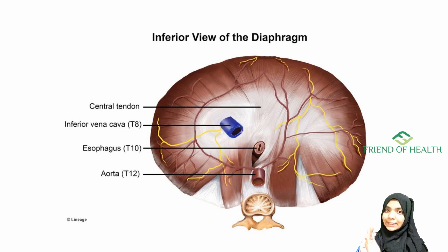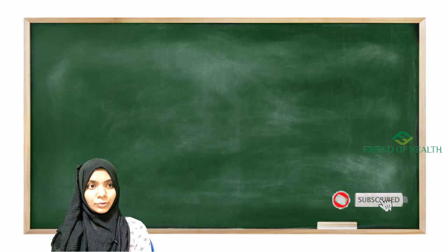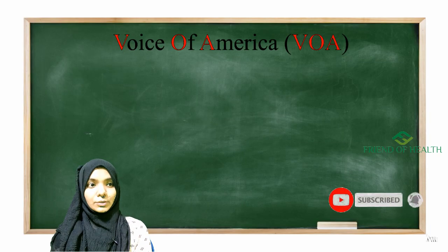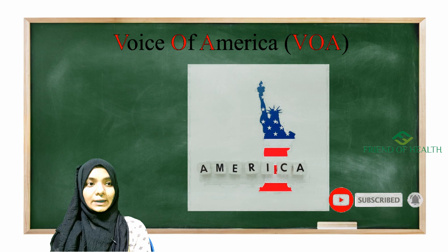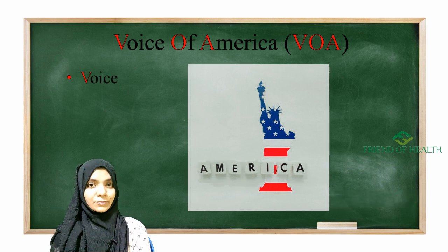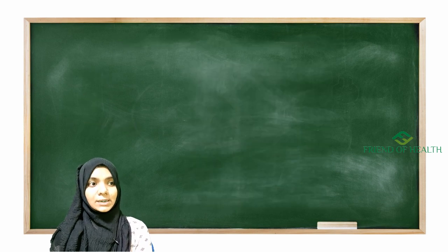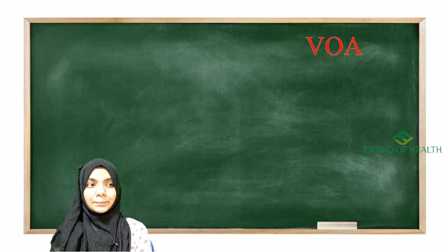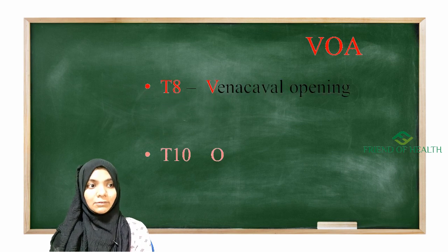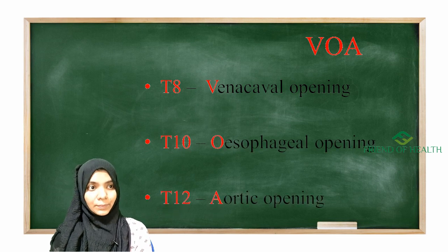Now let us move to the mnemonic. The mnemonic is 'Voice of America.' This picture is just for memorizing it. So in 'Voice of America': V stands for vena cava opening at T8, O stands for esophageal opening at T10, and A stands for aortic opening at T12. So V-O-A — 'Voice of America.'